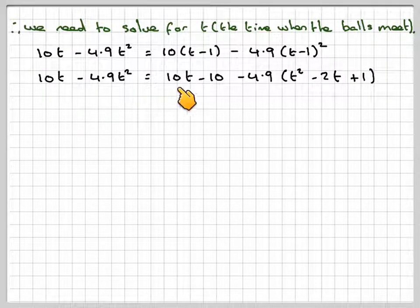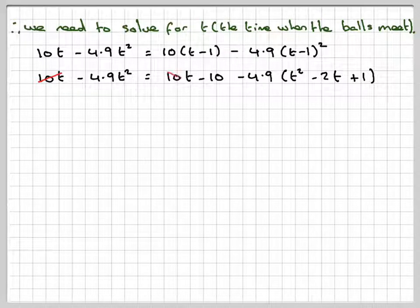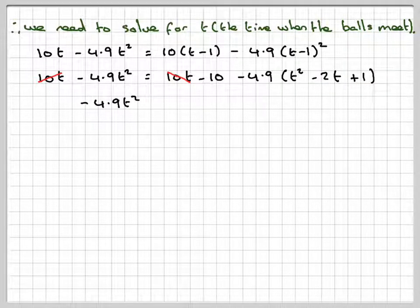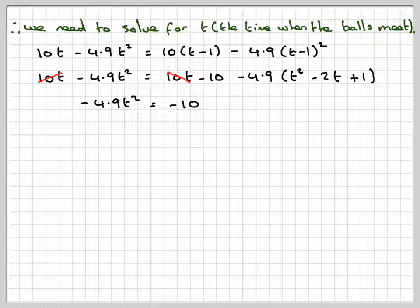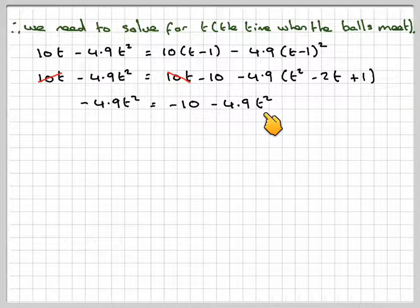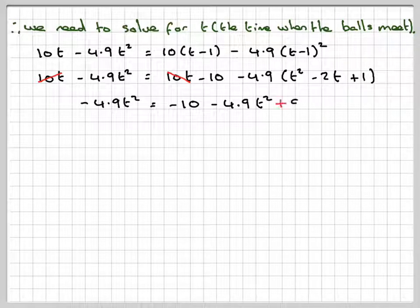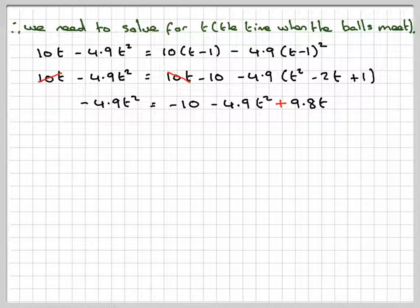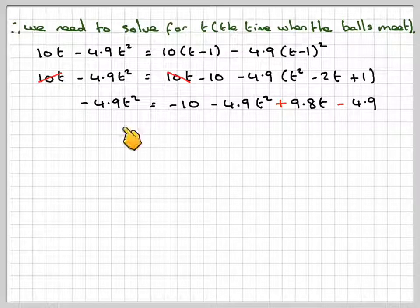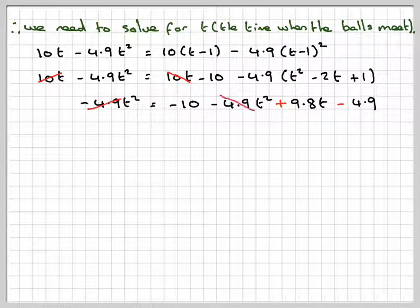Right, the 10Ts now cancel out, and you're left with minus 4.9T squared equals minus 10. Taking this in here, we get minus 4.9T squared plus 9.8T minus 4.9. Right, the minus 4.9T squares cancel out.